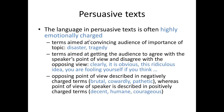Often, however, the language used in persuasive texts is highly emotionally charged. It may use terms such as 'disaster' or 'tragedy' to convince the audience of the importance of the topic. It also typically uses terms aimed at getting the audience to agree with the speaker's point of view and disagree with the opposing view, such as 'clearly', 'it is obvious', 'this ridiculous idea', 'you're fooling yourself if you think'. Typically, the opposing point of view will be described in negatively charged terms such as 'brutal', 'cowardly', or 'pathetic', whereas the point of view being promoted will be described in positively charged terms such as 'decent', 'humane', or 'courageous'.